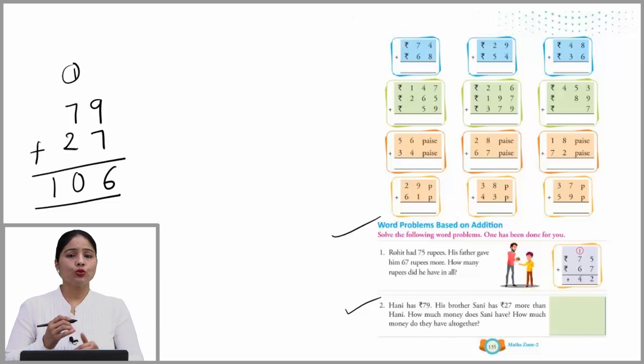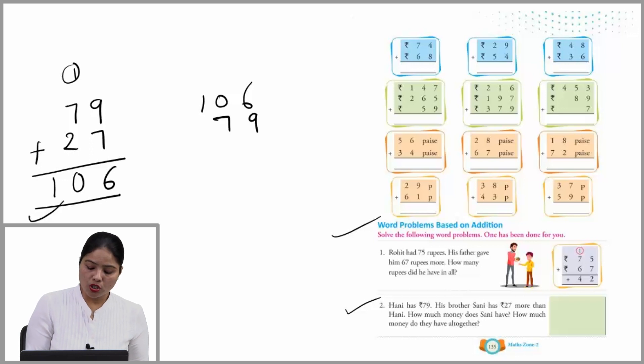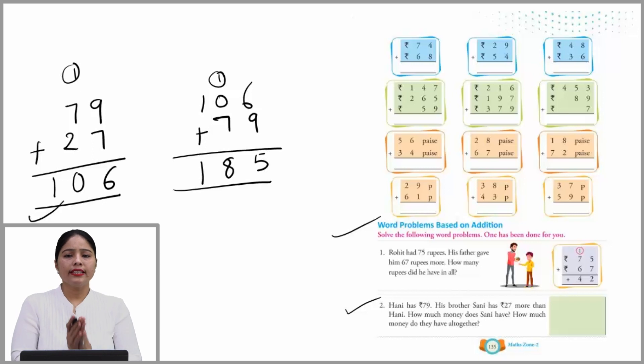Now, how much do they have all together? So we have both their values. Write the value of that one: 106 rupees. Now add Harry's cost - Harry had 79 rupees. Just add both values. 9 and 6 are 15. Write 5, carry 1. 7 plus 1 is 8, and this is 1. So we can say that 185 rupees they have all together. Sanny had 106 rupees. This is the answer. This is very easy. Do the other one yourself.